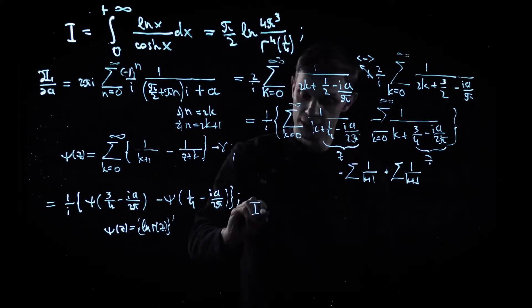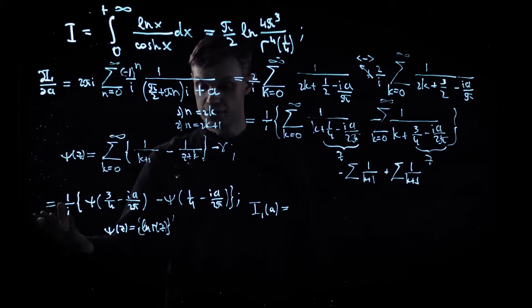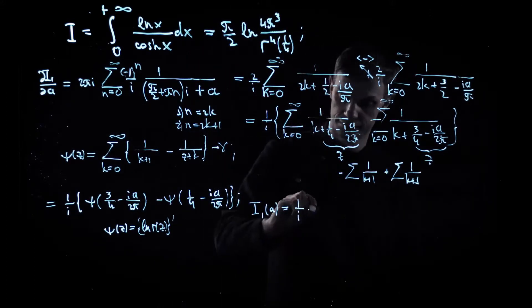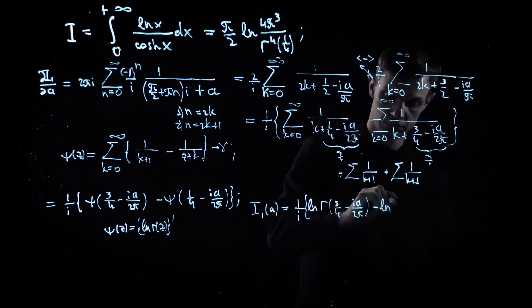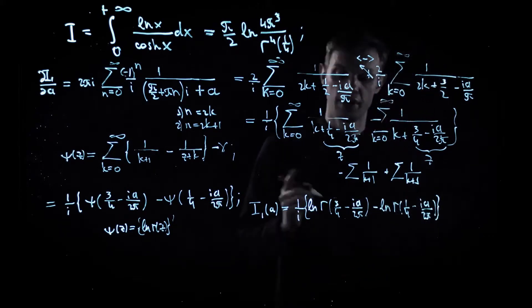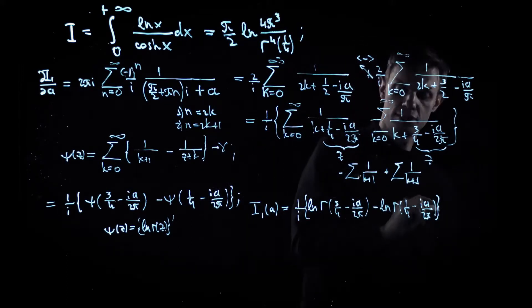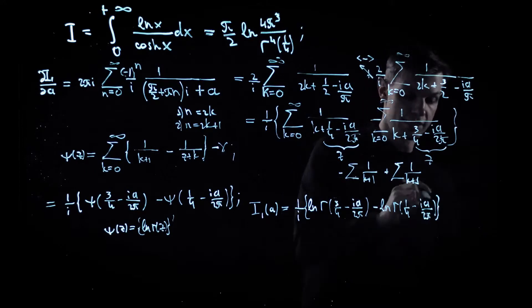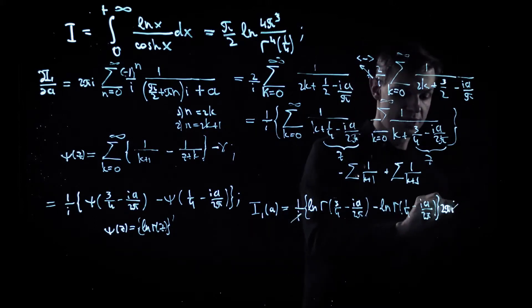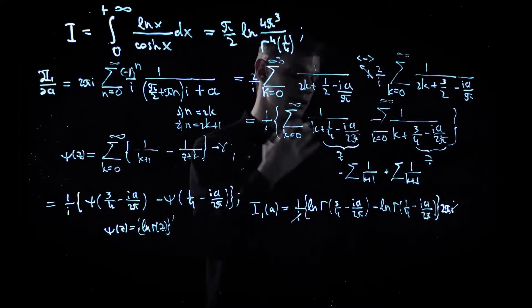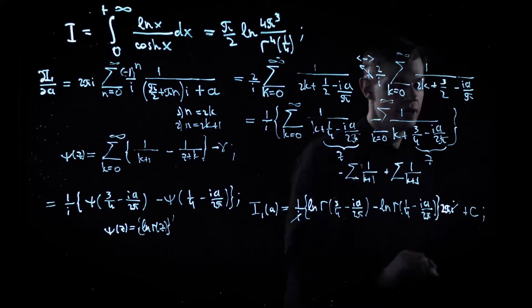As a result, we integrate both parts of the equation. The digamma function here gives us the difference of two logs of Euler's gamma function, and here we add an additional pre-factor which comes from the anti-derivative, which is 2 pi divided by negative i, so it's basically times 2 pi i, hence i disappears completely. However, there is a problem because we take an indefinite integral from both parts, so there is an additional a-independent constant here which we should somehow fix.